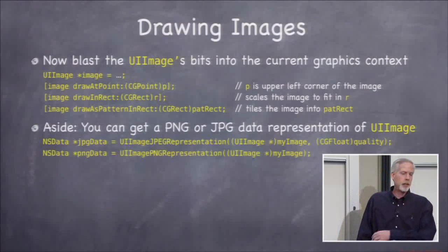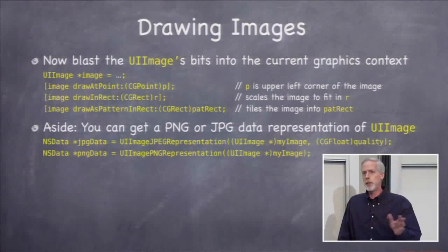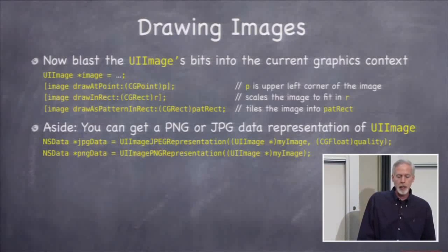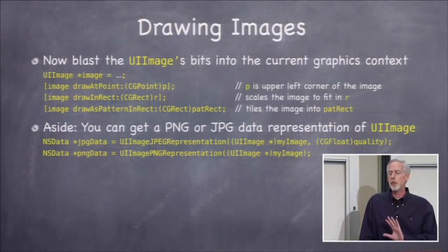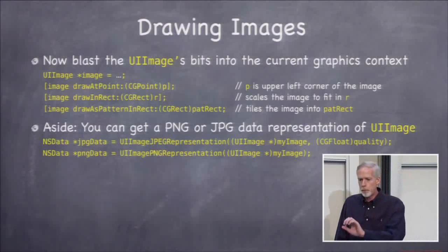You can also get other representations, like PNG representations of things you've drawn. You don't need that for your homework, but it's in there. Drawing text in images is really easy — it's just an attributed string in UIImage, draw at point or draw in rect.